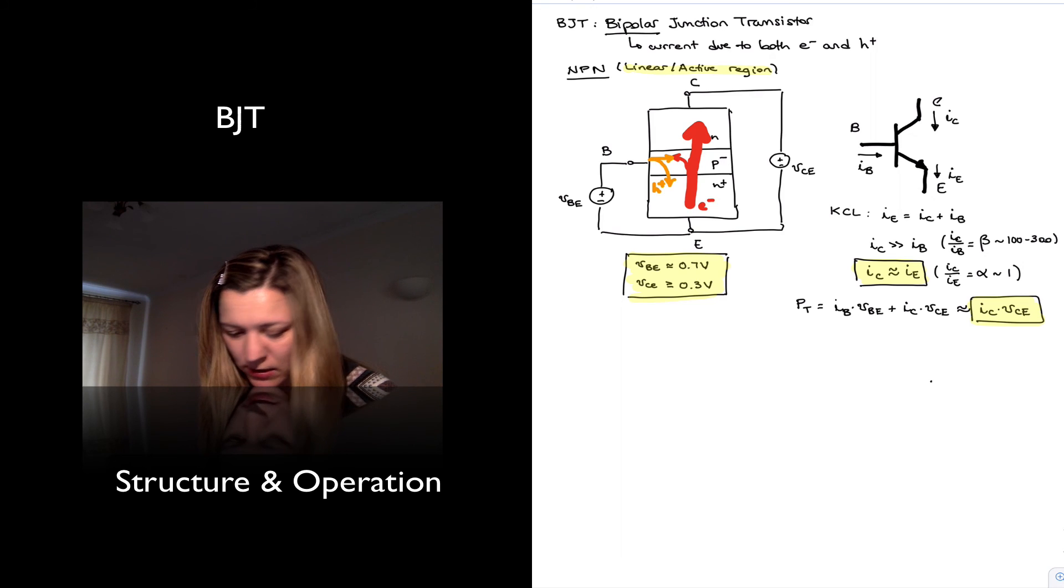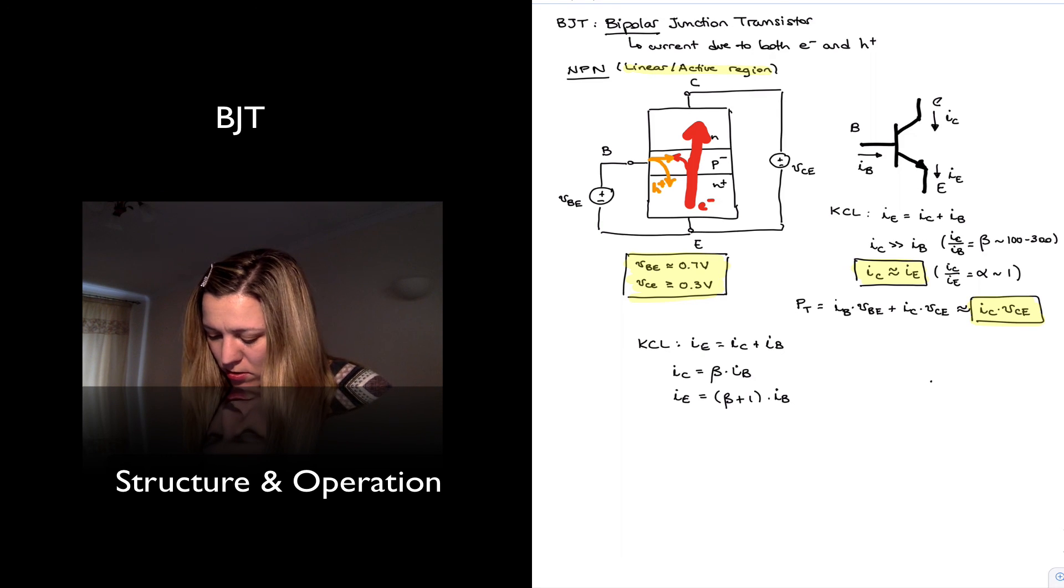In fact, I can write my KCL, again, which I have written up here, as IE equals IC plus IB. And we know that IC is equal to beta times IB, because of that ratio that we established before. So I can rewrite my first equation as IE being equal to IC, which is beta times IB plus IB, or beta plus 1 times IB. And so I can solve for IB as it being equal to IE divided by beta plus 1.